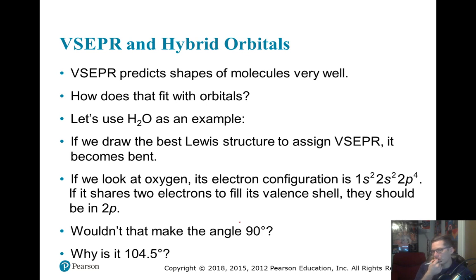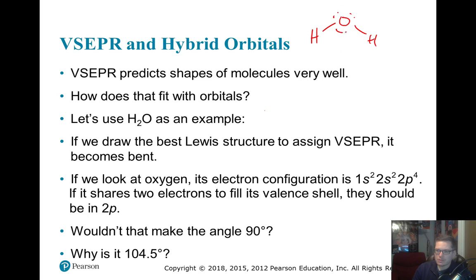Here's the problem with just using the valence shell directly. If we think about a water molecule, we know it's a bent molecule. The bond angle is based off tetrahedral, and with lone pairs taking up extra space it's less than 109.5 degrees. VSEPR matches very well with experimental data for this bond angle.